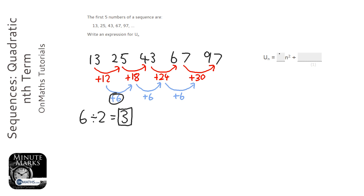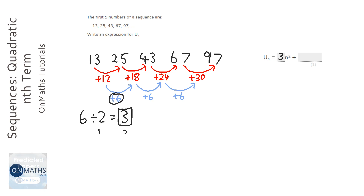This 3 is going to be the coefficient of the n squared, so I can fill that into my answer now. What we need to do is write out the sequence 3n squared. So let's number the terms: first term, second term, third term, fourth term, and fifth term.